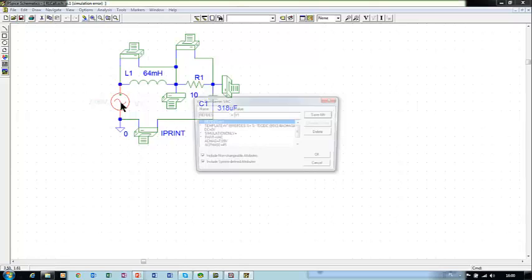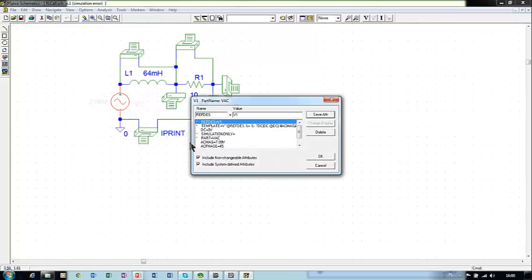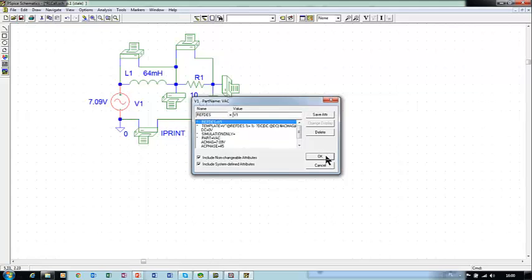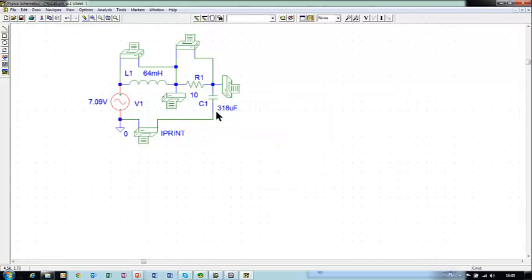For example, voltage source. Yes, we double click on voltage source. Its voltage root mean square value is here and its phase angle is 45 degrees. Same with all other elements.